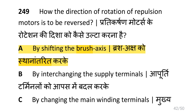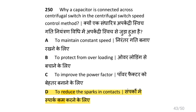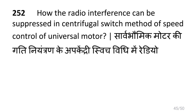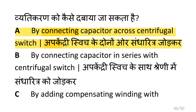How is the direction of rotation of repulsion motor reversed? That is by shifting the brush axis. Why is the capacitor connected across the centrifugal switch in the centrifugal switch speed control method? To reduce the sparks on the contacts. How can radio interference be suppressed in centrifugal switch method of speed control of universal motor? That is by connecting a capacitor across the centrifugal switch.